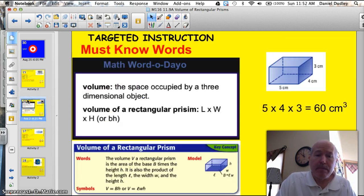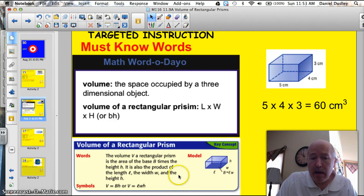Let's get to the vocab for the night. Here it is, volume, the space occupied by a three-dimensional object. The volume of a rectangular prism, you can get it by multiplying the length times the width times the height, or the base times the height, and I'll talk about that at the end. It's the same thing. They just combine the length and the width. Here it is, cut and pasted right out of your book. Volume equals BH, base times height, or volume equals length times width times height. I use this one here. I just think it's a little bit easier.